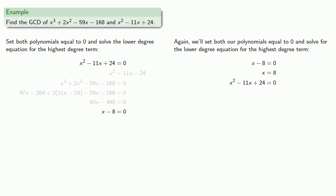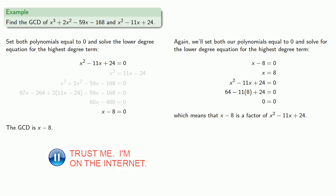And if we substitute x equal to 8 into our other polynomial we get nothing. Which means that x minus 8 is a factor of x-squared minus 11x plus 24. And so it's going to be the GCD. Now we won't go into the details but this is essentially a version of the Euclidean algorithm.